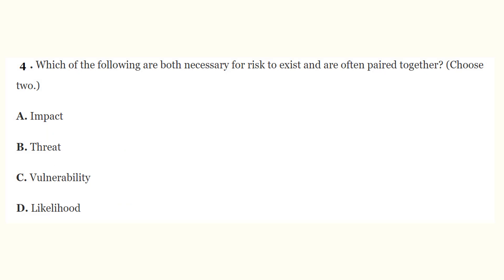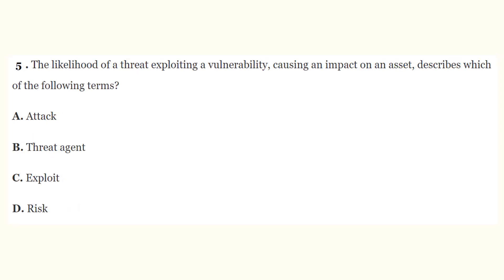Question number four: which of the following are both necessary for risk to exist and are often paired together? Choose two answers. The correct answers are B, a threat, and C, a vulnerability. Threats and vulnerabilities are both necessary for risk to exist and are often paired together in assessments, since you cannot have risk if you have one without the other.